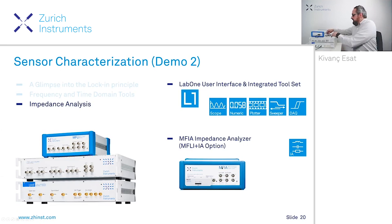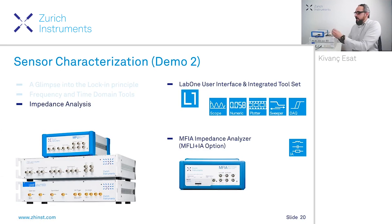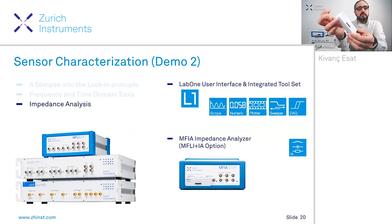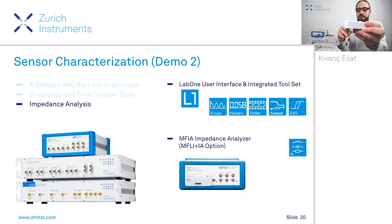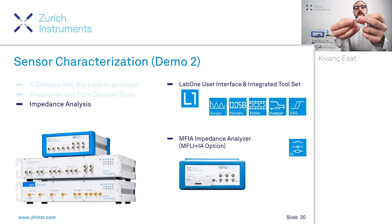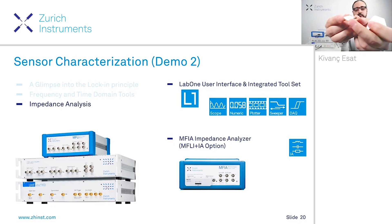This instrument or impedance analyzer comes with a test fixture where you can conveniently place it on the front panel of the instrument. It has pins to introduce a PCB-mounted device, and in this case I will be using a photodiode.